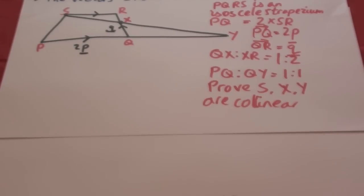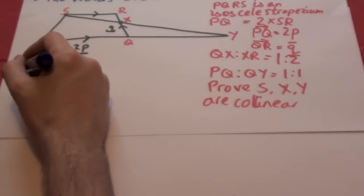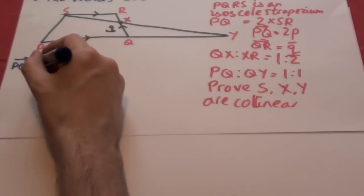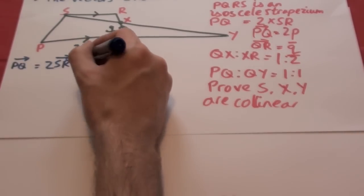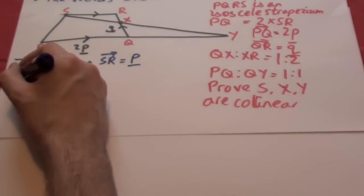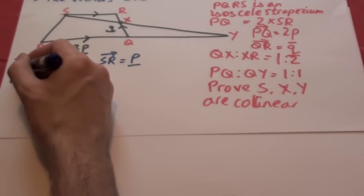So let's work this out. First of all, we need to do a little bit of proof about what PQ is. So PQ is 2P. And it's equal to twice of SR. So SR is the same as P.